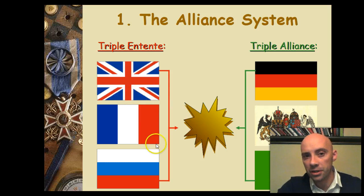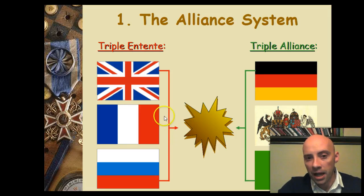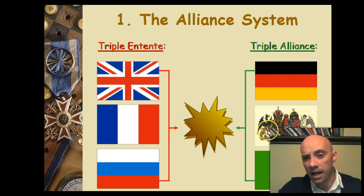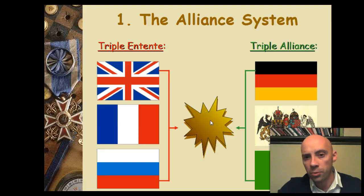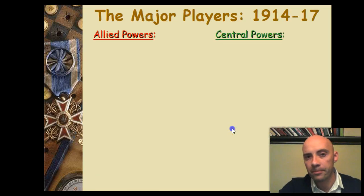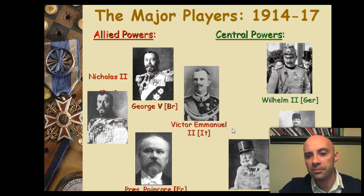So there were two systems. One was the Triple Entente, led primarily by France, with Britain and France as the major partners and Belgium as another partner. The Triple Alliance had Germany as the major player, with Austria-Hungary and Italy initially. Once war actually broke out, Italy left the Triple Alliance and joined the Triple Entente. Italy's place in the Triple Alliance was then taken by the Ottoman Empire.